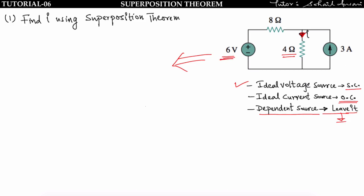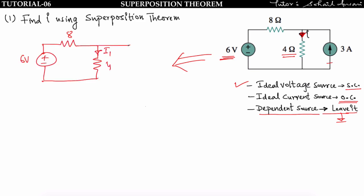I am considering the 6V source first, so the current source is open circuited. The 8Ω and 4Ω are connected in series, so i1 = 6 / (8+4) = 1/2 ampere.